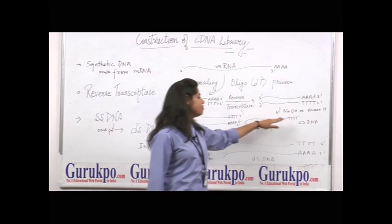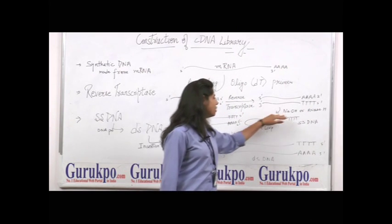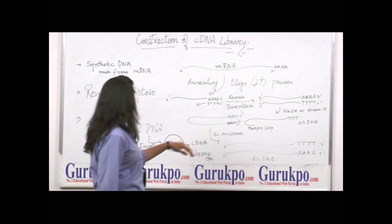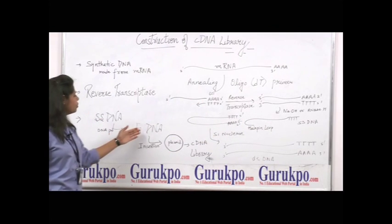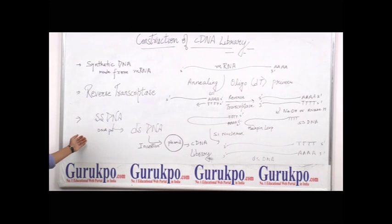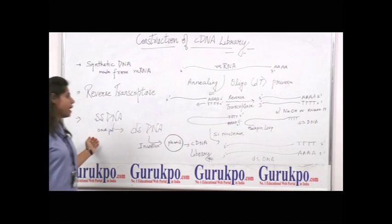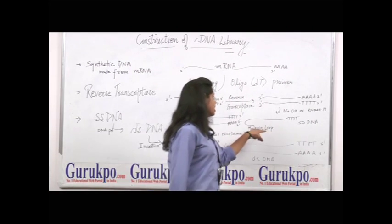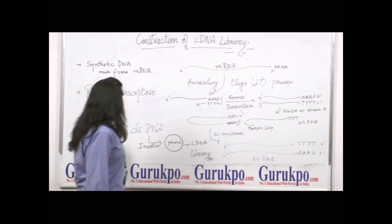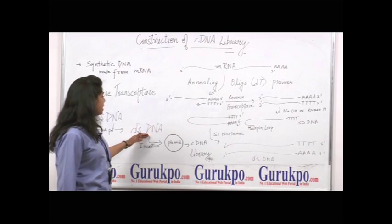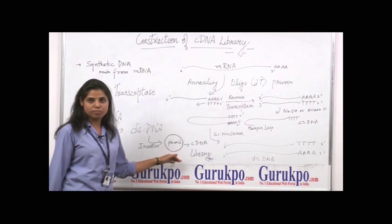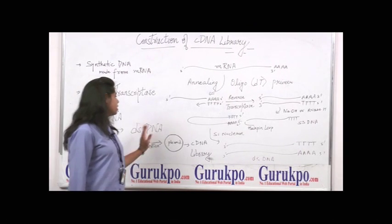Now we are left with this hairpin loop-like structure. This single-stranded DNA is converted into a double-stranded DNA by DNA polymerase. The primer for DNA polymerase is represented by this hairpin loop. This double-stranded DNA is then inserted into a plasmid.